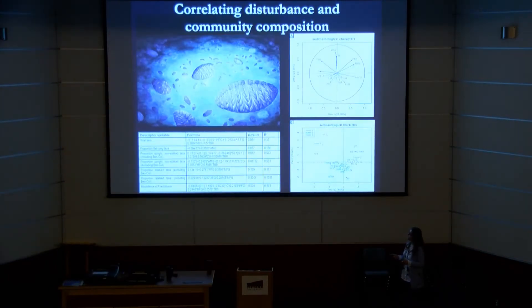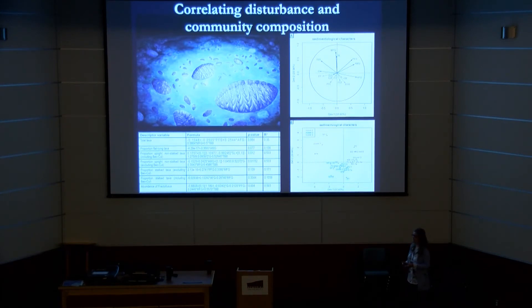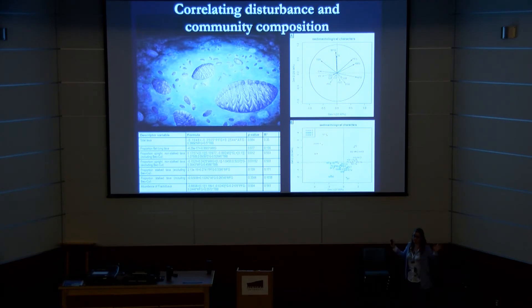We can also describe the communities using various metrics: the total number of taxa, the proportion of flat-lying, bushy, stalked, or upright taxa, the prevalence of different branching characters - whether displayed and open like Bragatio, or more tucked in like Charnia - and also the abundance of particular taxa.